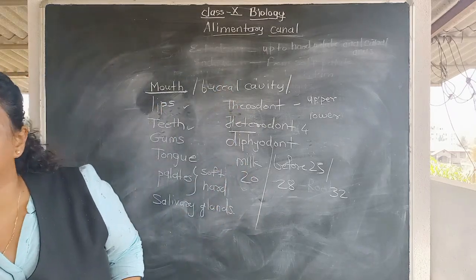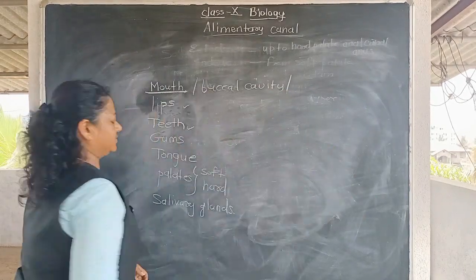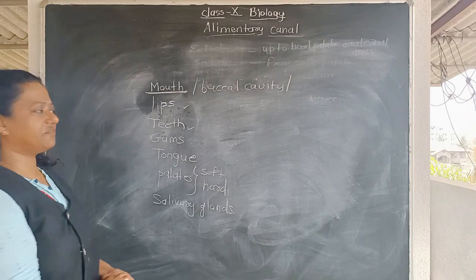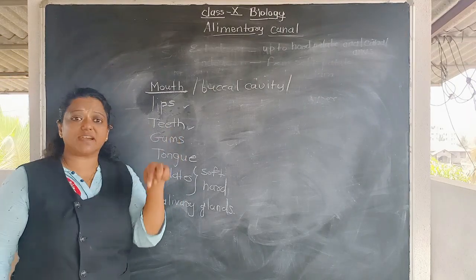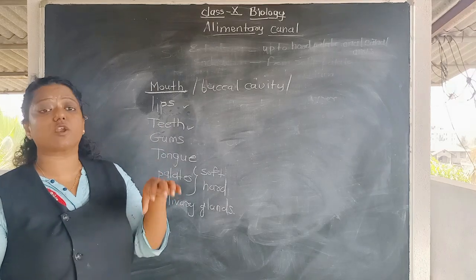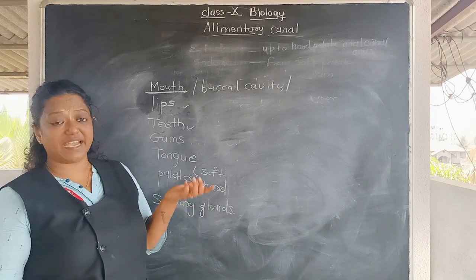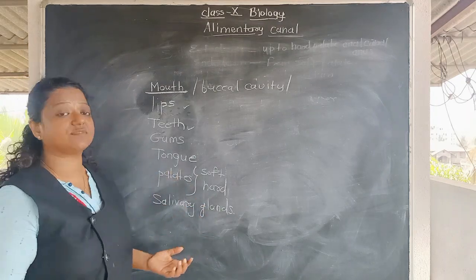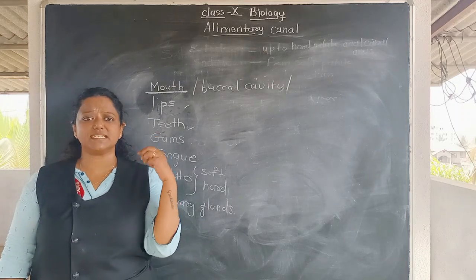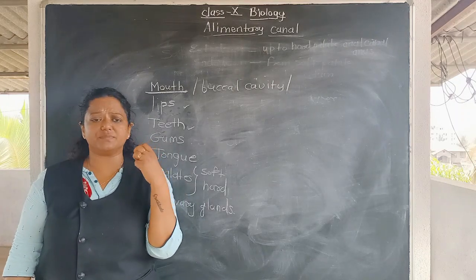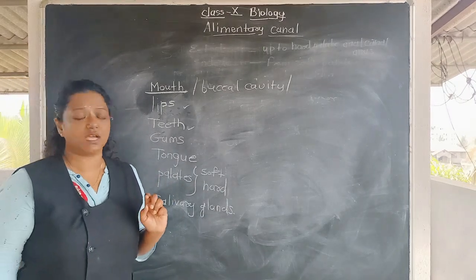Next we discuss gums. The teeth are inserted into the gums — specifically, the root of the teeth is inserted into the gums. In scientific language, gums are called gingiva. This gingiva is not only present at the root of the teeth but also between the teeth.